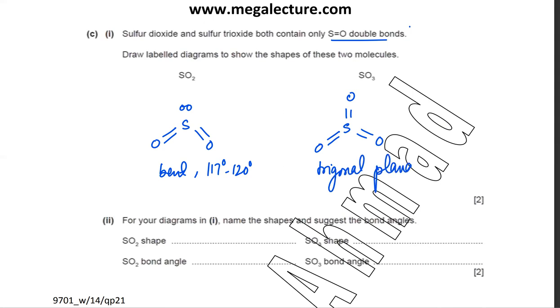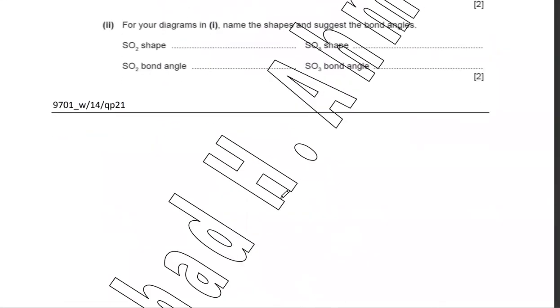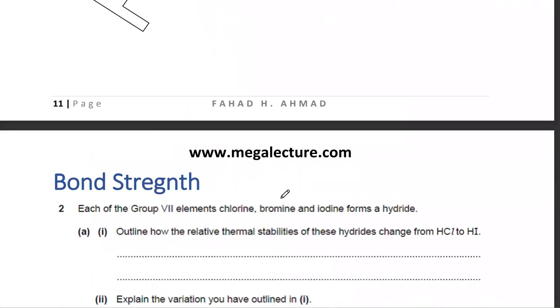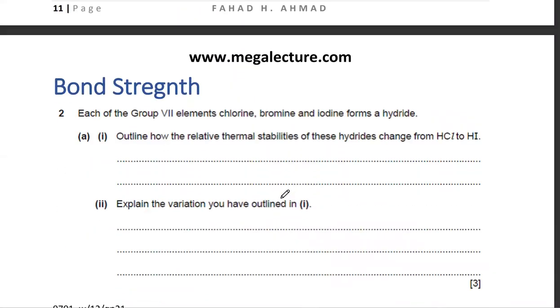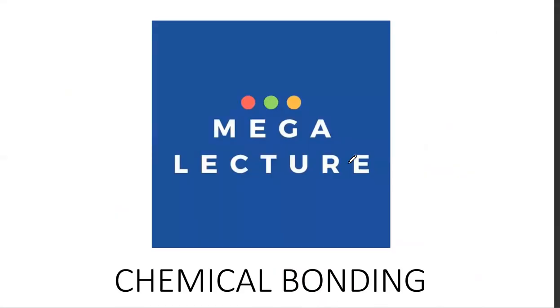The bond angle in SO2 is slightly less than 120 degrees — around 117 to 120 — because the lone pair has greater repulsion. The bond angle in SO3 is exactly 120 degrees.